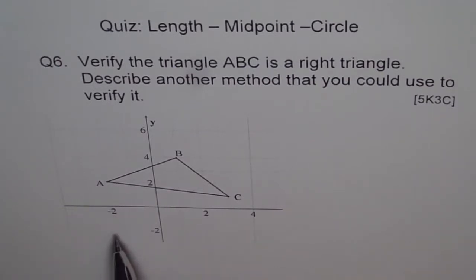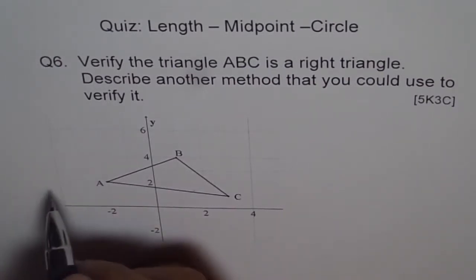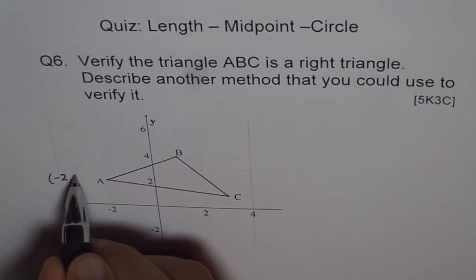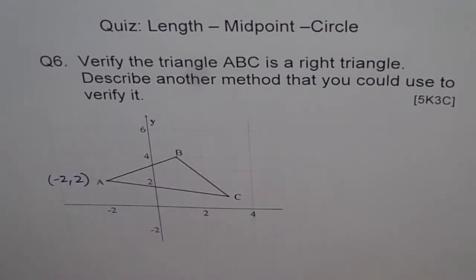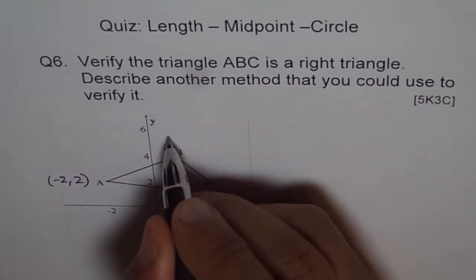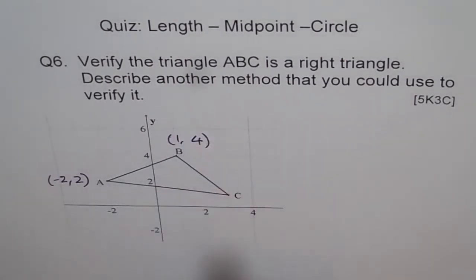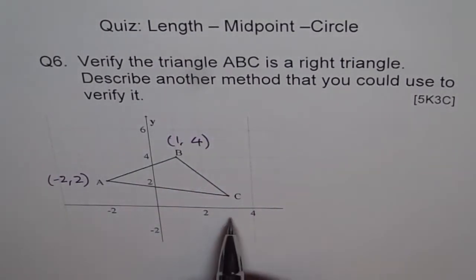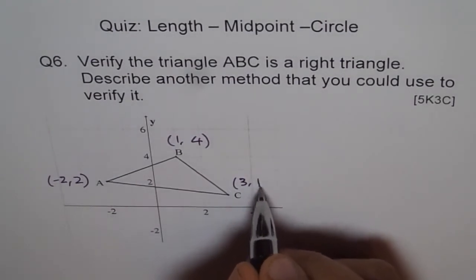So for example, A is what? Minus two and two. So let's write it here. Minus two and two, right? Point B is one, four. So we'll write one and four. Point C is three and one. So we'll write three and one.